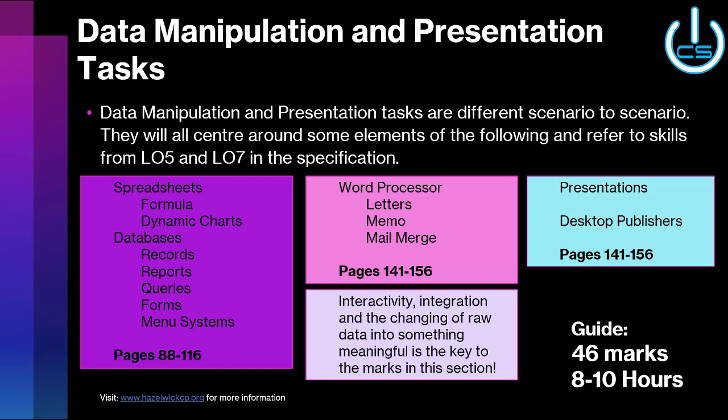Moving on to data manipulation and presentation tasks. There could be one, two, or three such tasks, combining for 46 marks. Eight to ten hours out of the 20 should be spent on these elements. This links to LO5 and LO7 in the specification — these are huge sections, so be aware of the skills required. You may be asked to create a spreadsheet, and in that spreadsheet you'll need to show your ability to use formulas and dynamic charts.